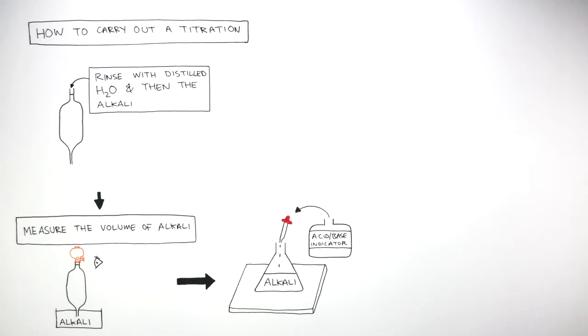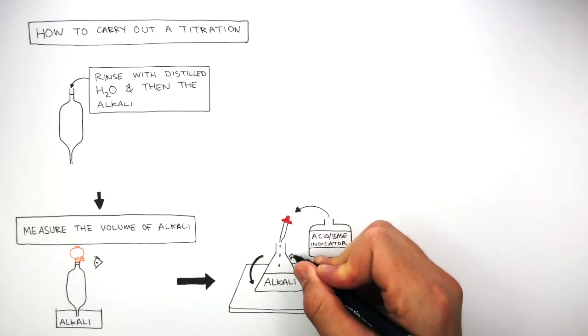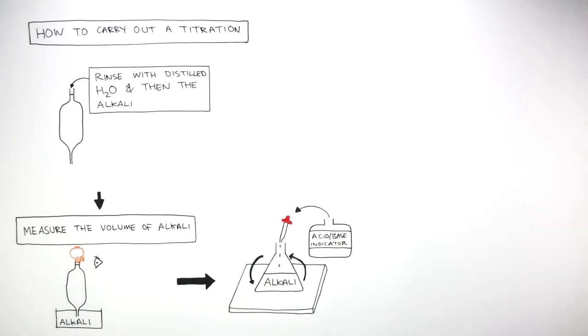Then a few drops of the acid-base indicator are added to the conical flask which is then swirled. This acid-base indicator is swirled in the conical flask.